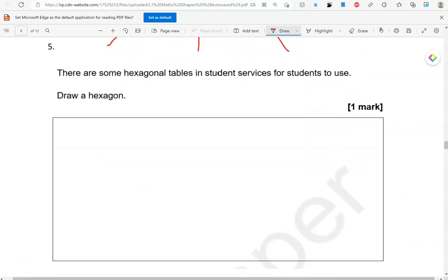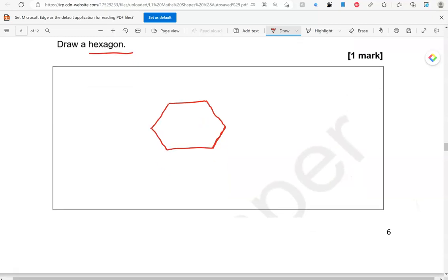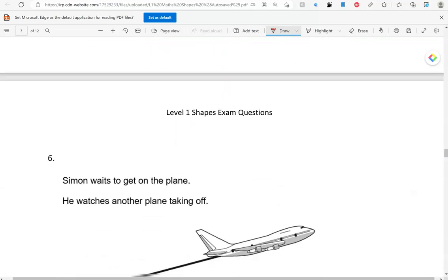There are some hexagonal tables in student services for students to use. Draw a hexagon. Again, it's not saying draw a regular hexagon. So, any shape with six sides will be just fine. Just make sure you use a ruler so you can draw straight lines. As long as it has six sides, it's absolutely fine. They don't need to be of the same length.